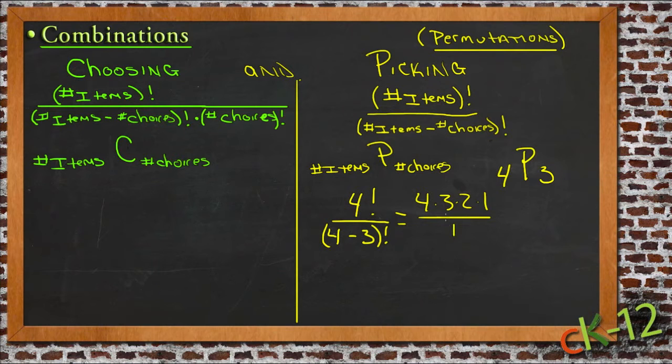So we have 24 different possibilities. There are 24 different ways to take four things and choose any three of them. For instance, let's say the things we have are the numbers 1 through 4. So our items would be the numbers 1, 2,